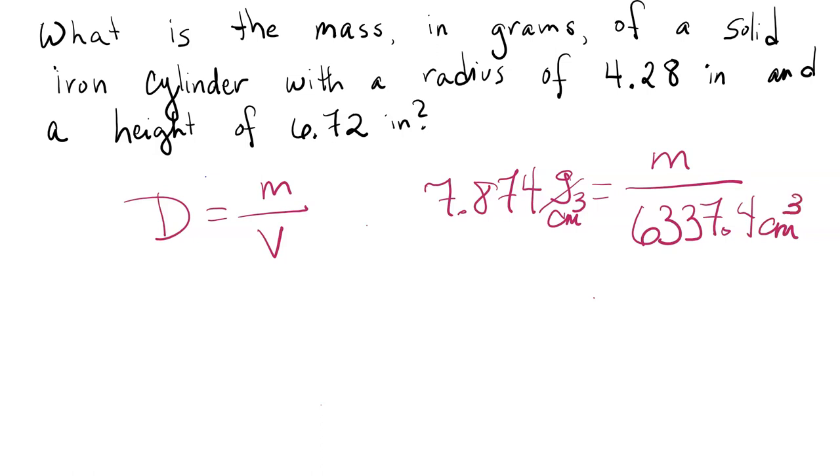Now it's just a relatively basic algebra problem. We're going to multiply both sides by this 6337.4. That's going to cancel it out on the one side, and give us our final mass in grams on the other. We're just going to plug that into our calculator now. And we're going to get an answer that looks something like this. That's going to be in grams.